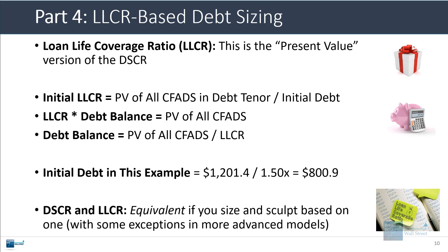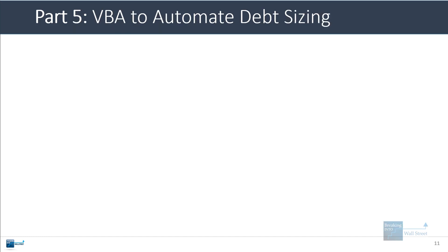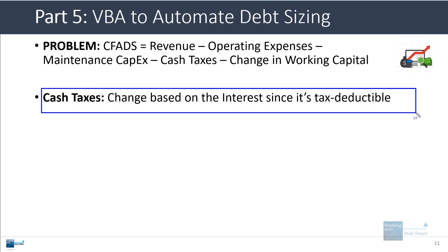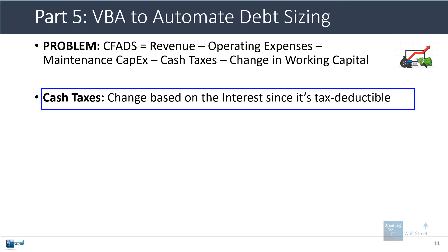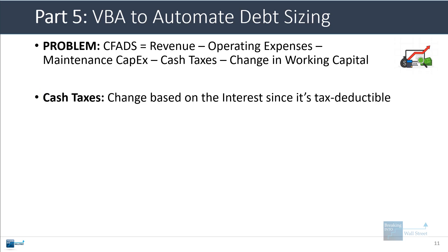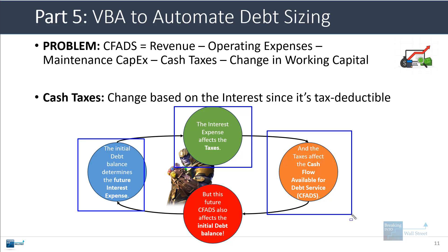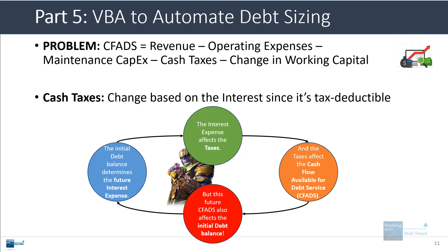The DSCR and LLCR equivalency is very important and useful, though there are some exceptions when you get into more advanced debt features. The last topic is what makes debt sizing more difficult in real life. The problem is that cash flow available for debt service subtracts cash taxes, but cash taxes change based on the interest expense because interest is tax-deductible at the corporate level. The initial debt balance determines the future interest expense; that interest expense affects the taxes; the taxes affect the CFADS; but the future CFADS also affects the initial debt balance — creating a giant circular loop.